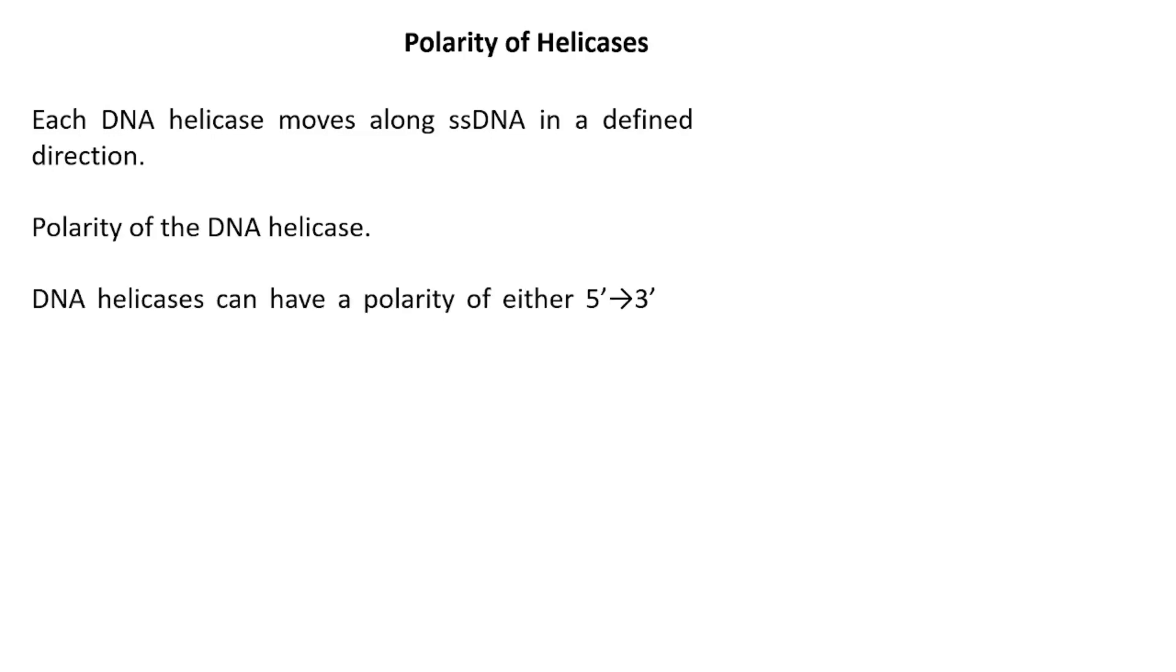Let us now discuss the polarity of helicase. Each DNA helicase moves along single-stranded DNA in a defined direction. This property is referred to as the polarity of the DNA helicase. DNA helicases can have a polarity of either 5' to 3' or 3' to 5' direction. This direction is always defined according to the strand of DNA bound. In order to check the polarity of the helicase, a simple assay was designed. A single-stranded DNA molecule was taken. To the 5' end, a 52 base pair labeled oligonucleotide probe was attached and to the 3' end, a 43 base pair oligonucleotide probe was attached. This substrate was then subjected to helicase of either of the polarities. The product was then subjected to electrophoresis and the results were interpreted.